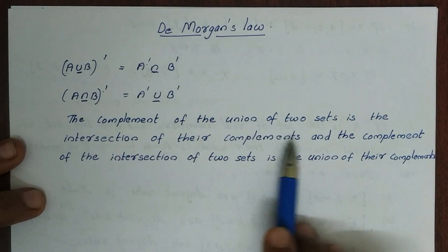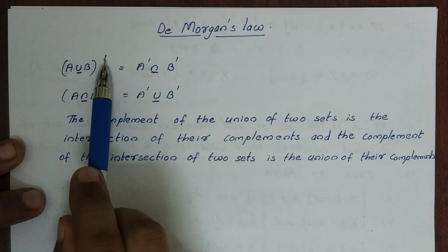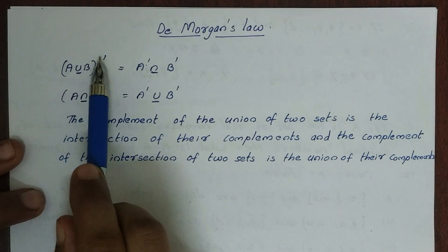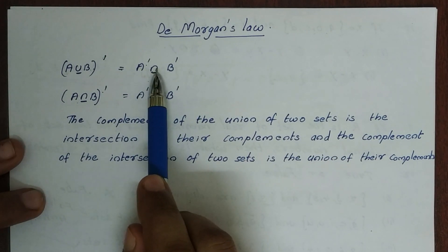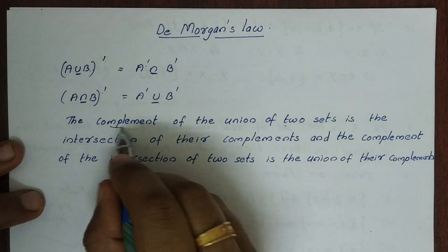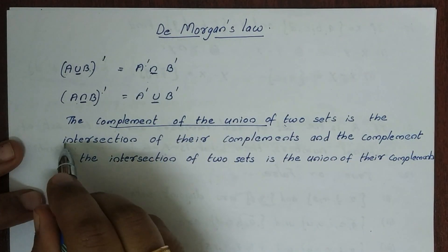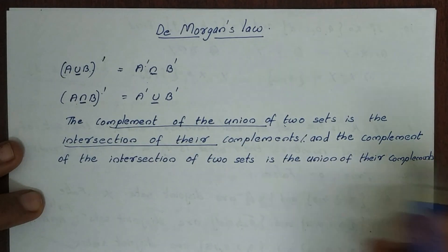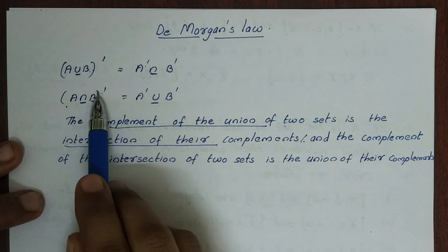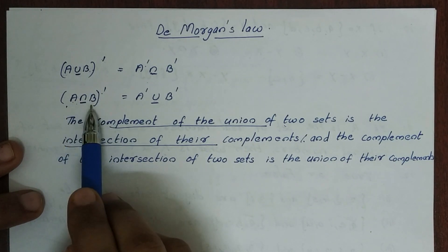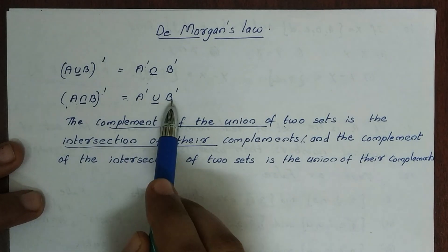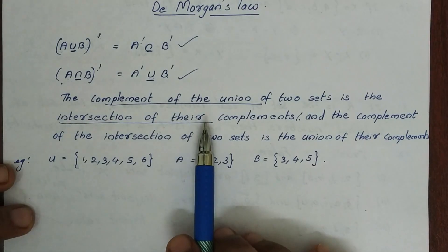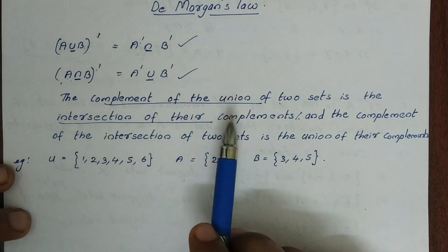The complement of the union of two sets is the intersection of their complements. And the complement of the intersection of two sets is the union of their complements. Let us prove this in De Morgan's law.